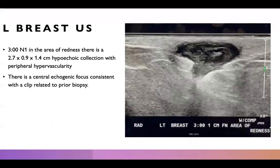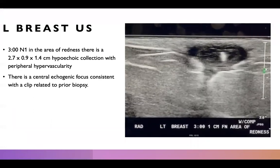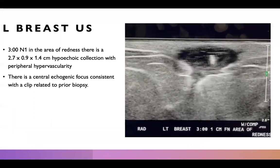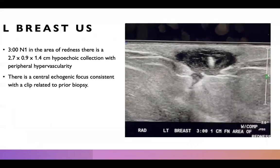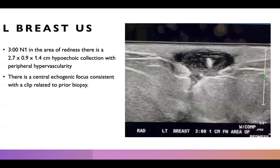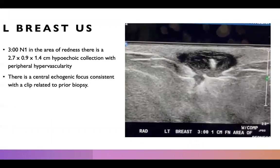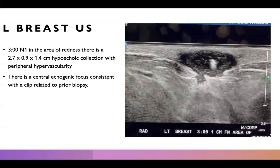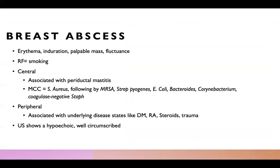For this patient, here's a video of her ultrasound. She has a 2.7-centimeter hypoechoic collection with peripheral hypervascularity at the three o'clock position, one centimeter from the nipple. There's also a central echogenic focus consistent with a clip related to prior biopsy. At this time, we diagnose our patient with a breast abscess.